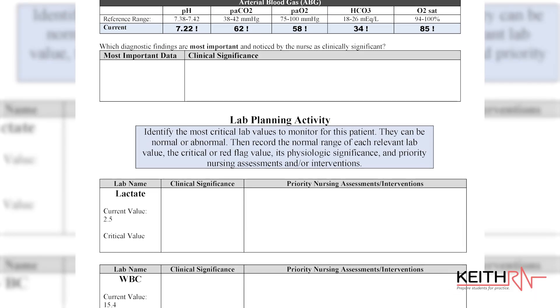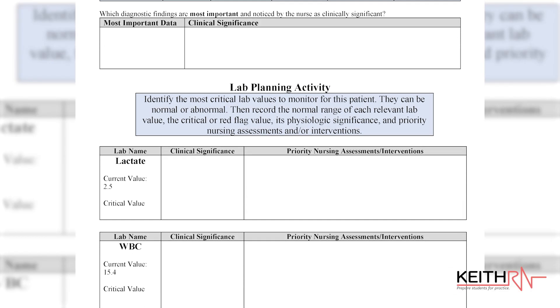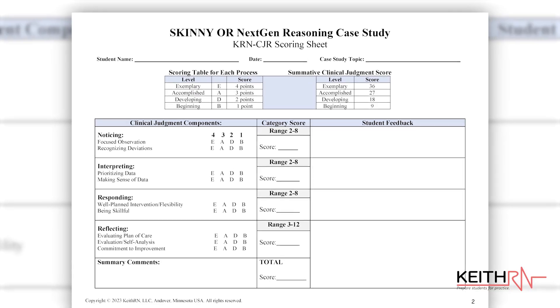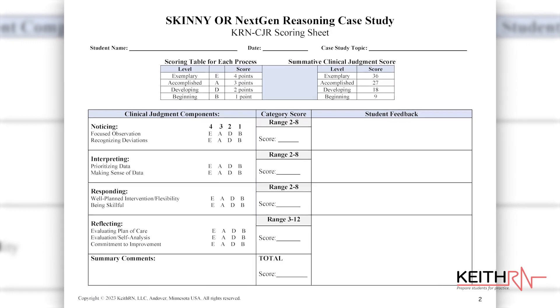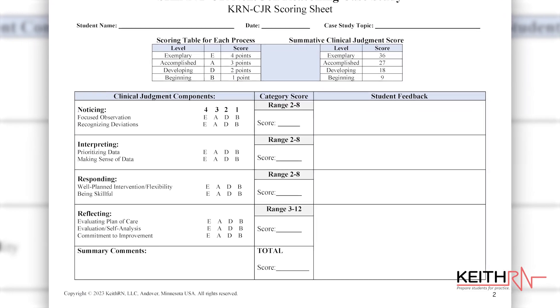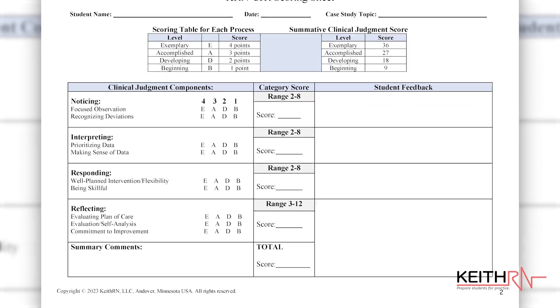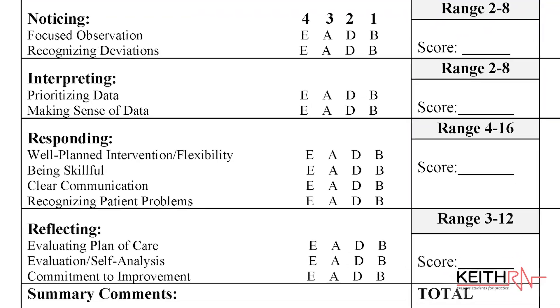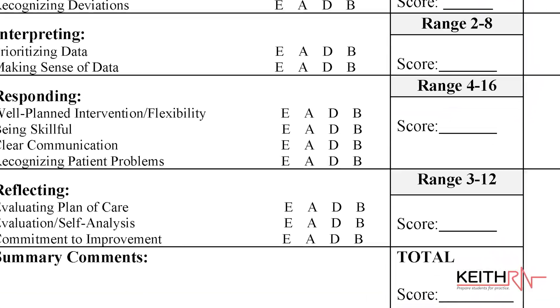To implement the rubric in your program, use a KeithRN clinical reasoning case study like an examination, preferably while students are on campus so that it can be monitored. Faculty can then score the case study using the rubric and get a numerical score of the student's clinical judgment. A simplified scoring worksheet is included and can be used for any level of KeithRN clinical reasoning case study.